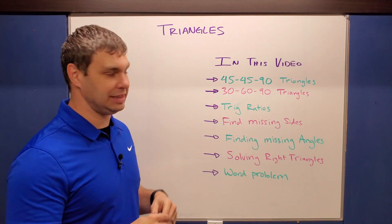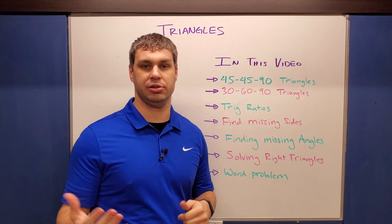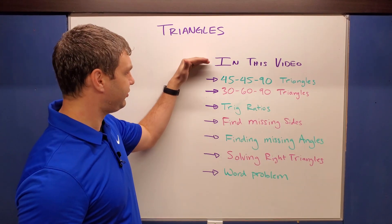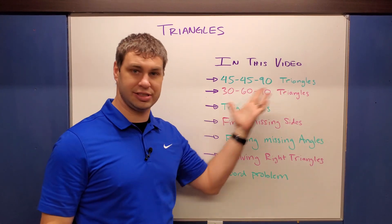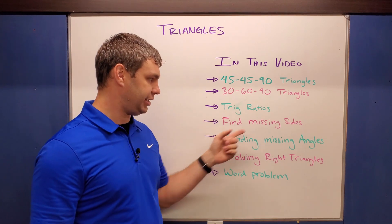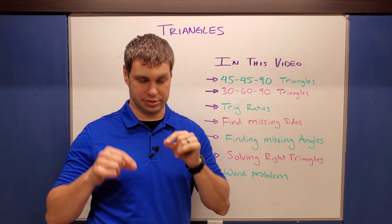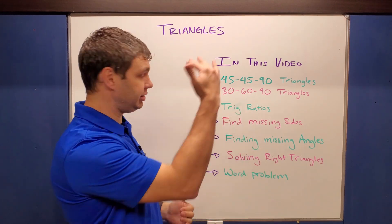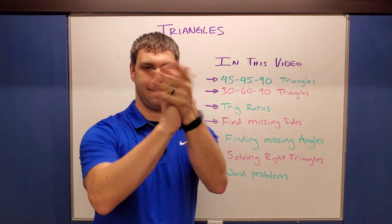My students have an upcoming quiz, and in this video I want to go over all the material that's going to be on it. If you're one of my students, or someone else on the internet, thank you for watching. This video is going to cover 45-45-90 right triangles, 30-60-90 right triangles, trig ratios, finding missing sides and angles, and more. There are timestamps below so you can jump to whichever section you need.